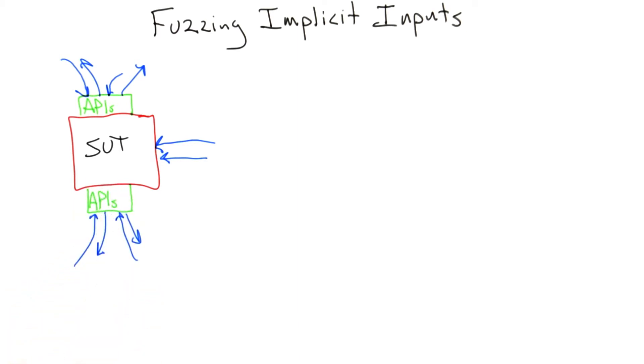What I'd like to talk about now is fuzzing of the implicit inputs that we talked about in Unit 2, where we have non-API inputs to the software under test that affect its behavior. This is often pretty important. So how would we do this?